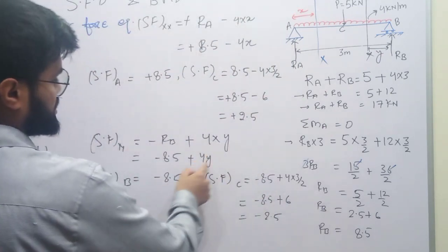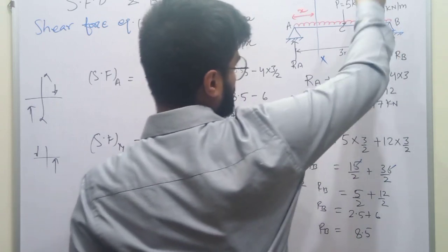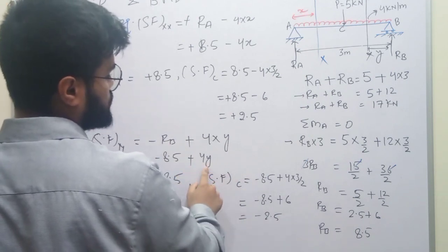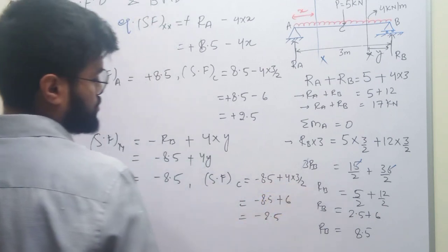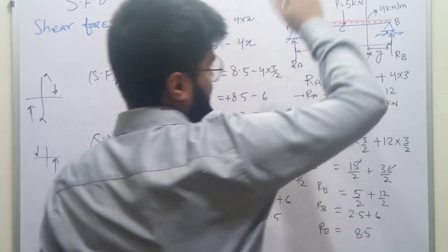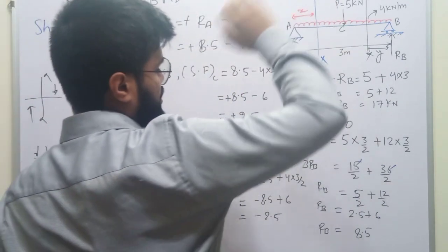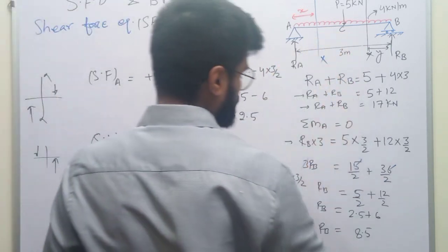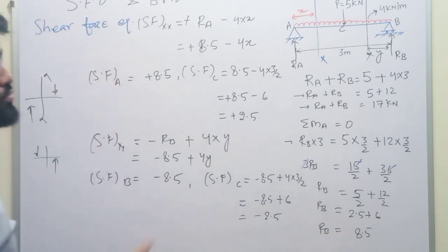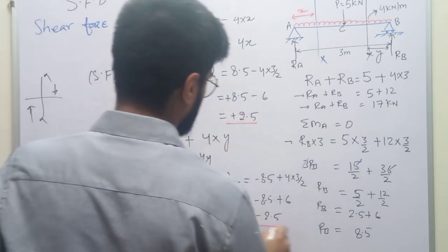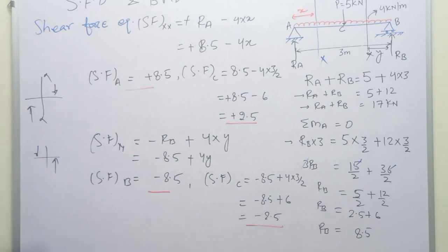Convention के according, section की इधर अगर होता है और downward direction में load लगता है तो उसे positive लेते हैं। इसलिए यहाँ plus लिया। y = 3/2 रखके simplify किया तो -2.5 आया। इसका मतलब C point पे sudden change आएगा share force में: plus 2.5 से minus 2.5 हो जा रहा है। अब A, B, और C पे सारी values मालूम हैं, इनको use करके shear force diagram बनाते हैं।